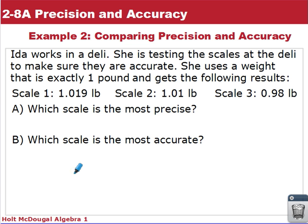In this example, we're going to be comparing precision and accuracy. So Ida works in a deli. She is testing the scales at the deli to make sure they are accurate. She uses a weight that is exactly one pound and gets the following results.